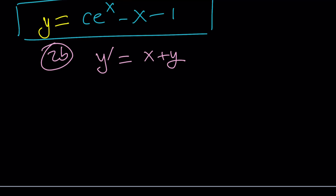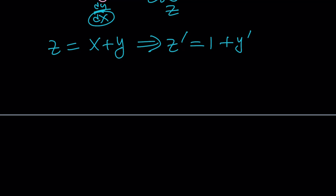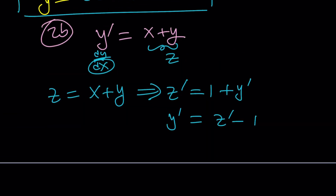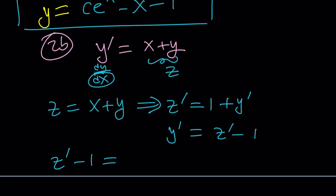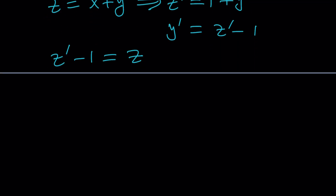In method 2b, we replace x plus y with z. So z equals x plus y. If you differentiate both sides — and note that y prime is dy over dx, so all differentials are with respect to x — you get z prime equals 1 plus y prime, so y prime equals z prime minus 1. Replacing y prime with z prime minus 1 and x plus y with z gives us our equation. Isolating z prime: dz over dx equals z plus 1. Separating variables: dz over z plus 1 equals dx.